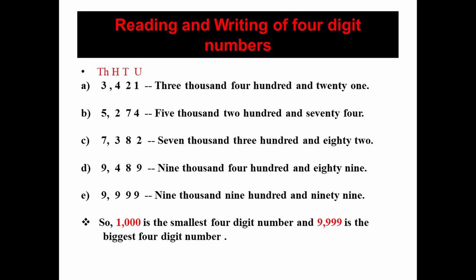Next: nine thousand nine hundred and ninety nine (9999). One important point to remember: one thousand is the smallest four digit number, and nine thousand nine hundred and ninety nine is the greatest four digit number.